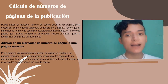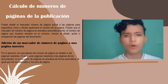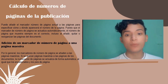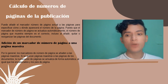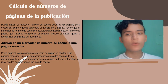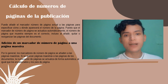Se puede añadir el marcador de página actual a las páginas para especificar cómo y dónde aparecerá el número de página. El número de páginas que muestra siempre es el correcto, incluso al añadir, quitar o reorganizar las páginas del documento. Los marcadores pueden tener formato y estilo de texto. Al aplicar páginas maestras a las páginas del documento, la numeración de páginas se actualiza en forma automática, al igual que los encabezados y pies de página. Si el número de páginas automático se encuentra en una página maestra, se mostrará el prefijo de dicha página.